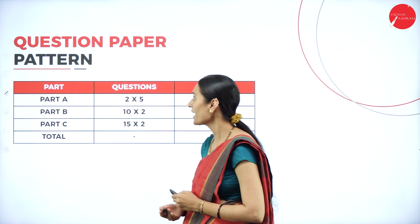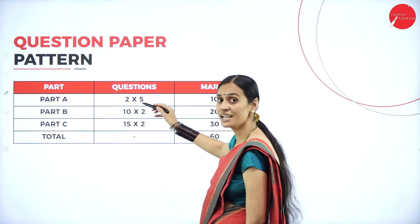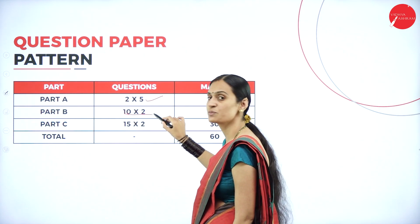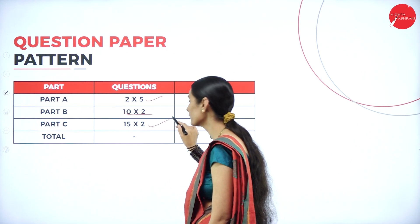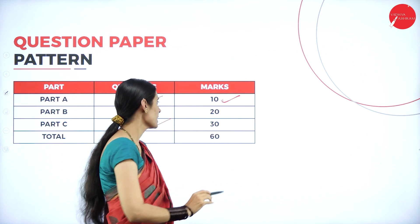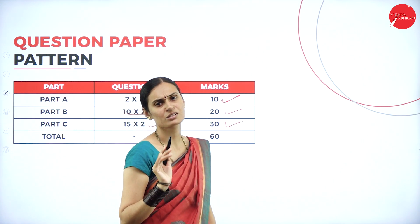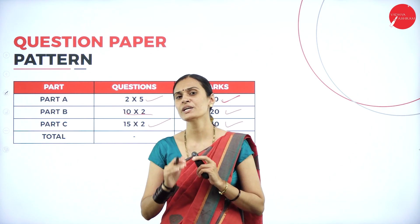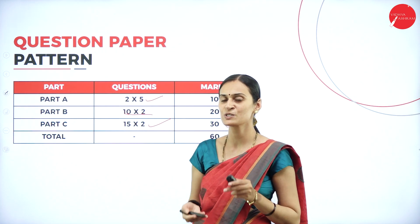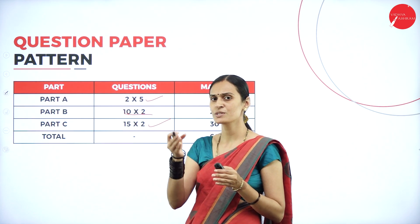For the external exam question paper pattern for 60 marks, there are three parts: Part A, Part B, and Part C. Part A has 2-mark questions — you must answer five questions for 10 marks. Part B has 10-mark questions — you must attend two questions for 20 marks. Part C has 15-mark questions — you must write two questions for 30 marks, with a choice provided. Total: 60 marks. For 10 and 15 marks questions, you should focus on the first three chapters; to score more marks in the 2-mark questions, you need to study quite deeply.